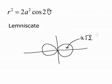Now here is a very common equation in polar coordinates. R squared equals 2a squared cosine 2 theta. This is a lemniscate, like a figure 8. This lemniscate is fixed on the x axis.